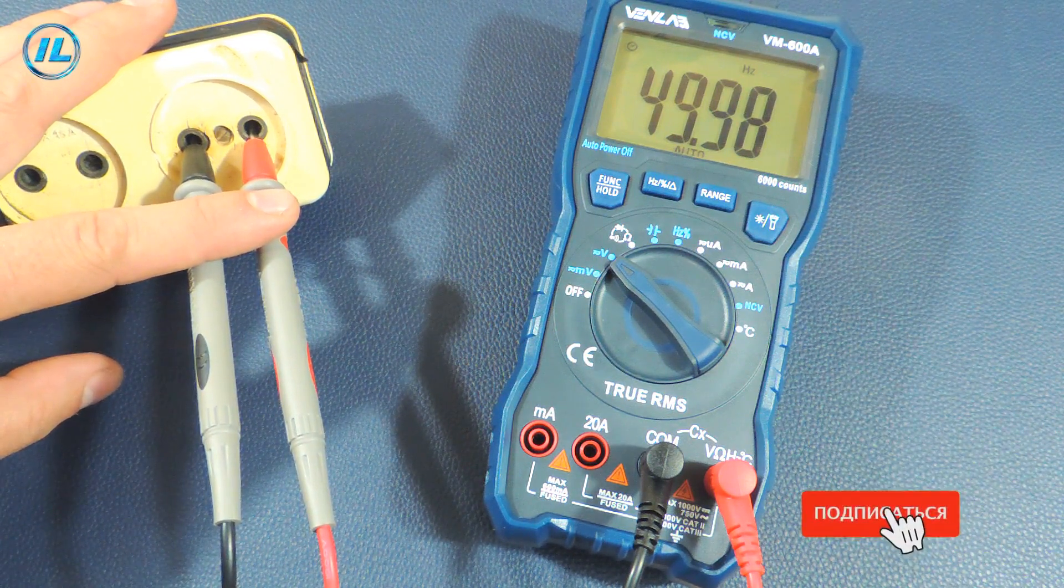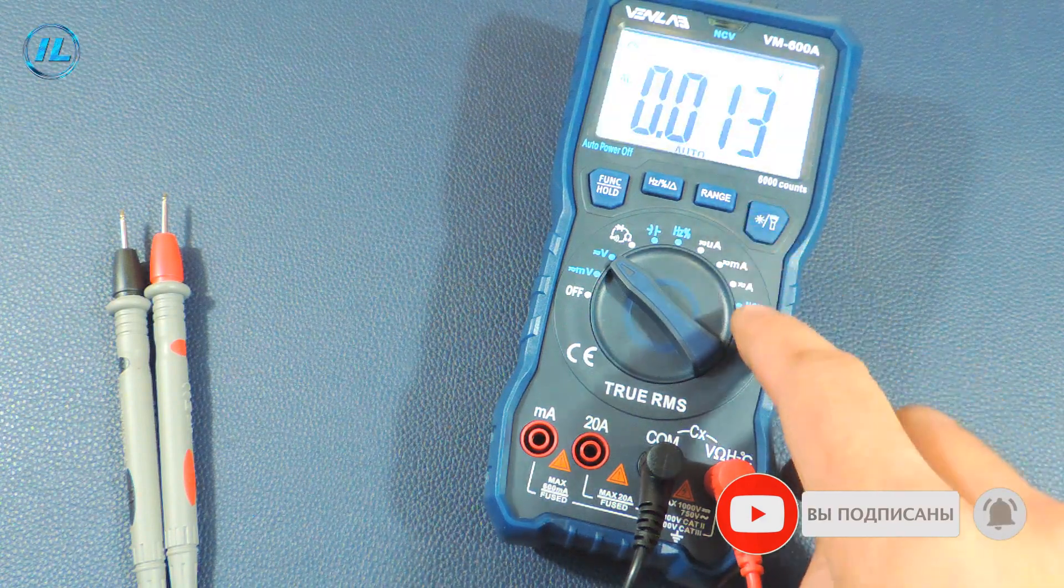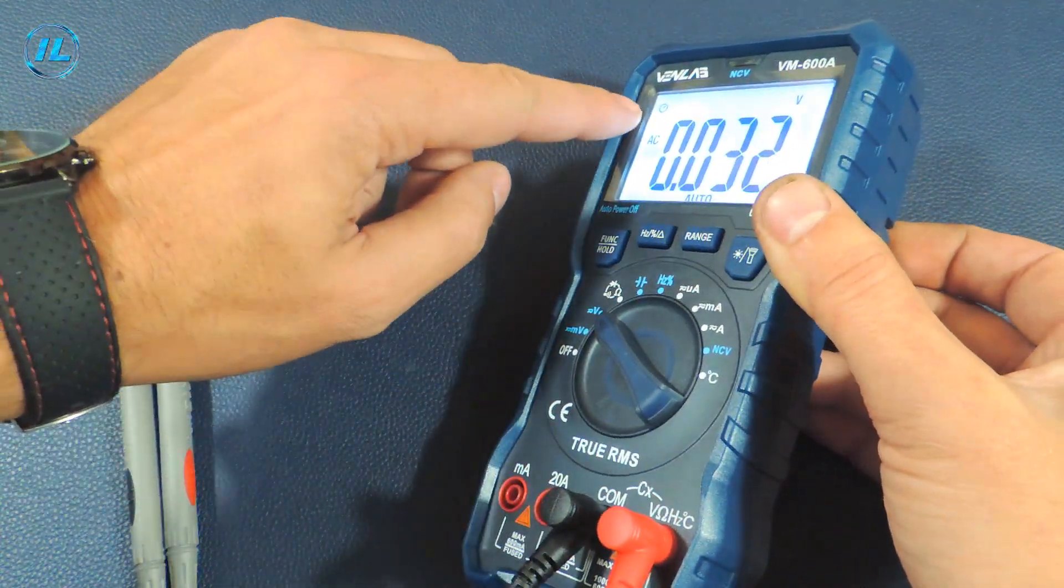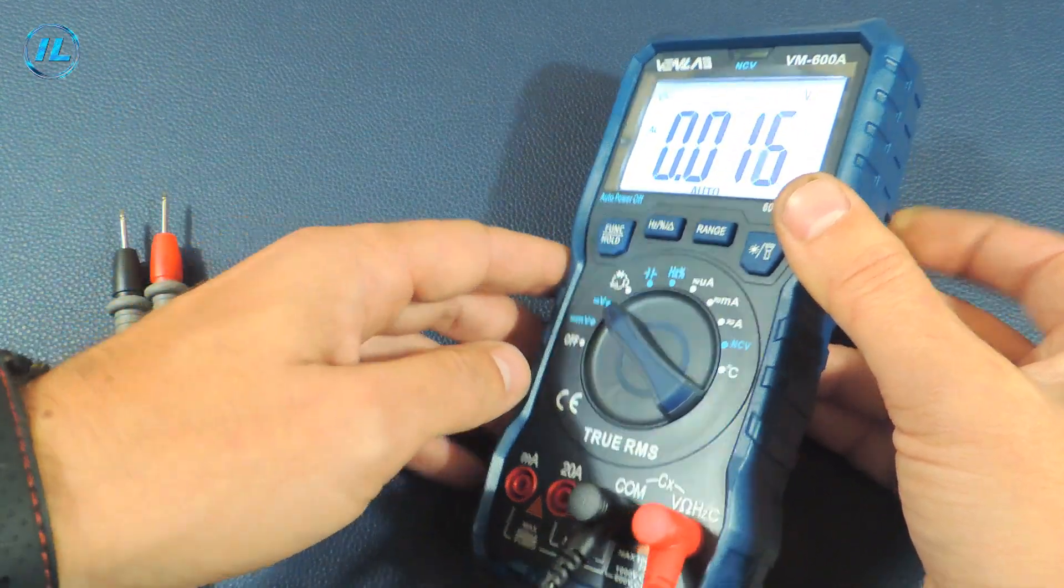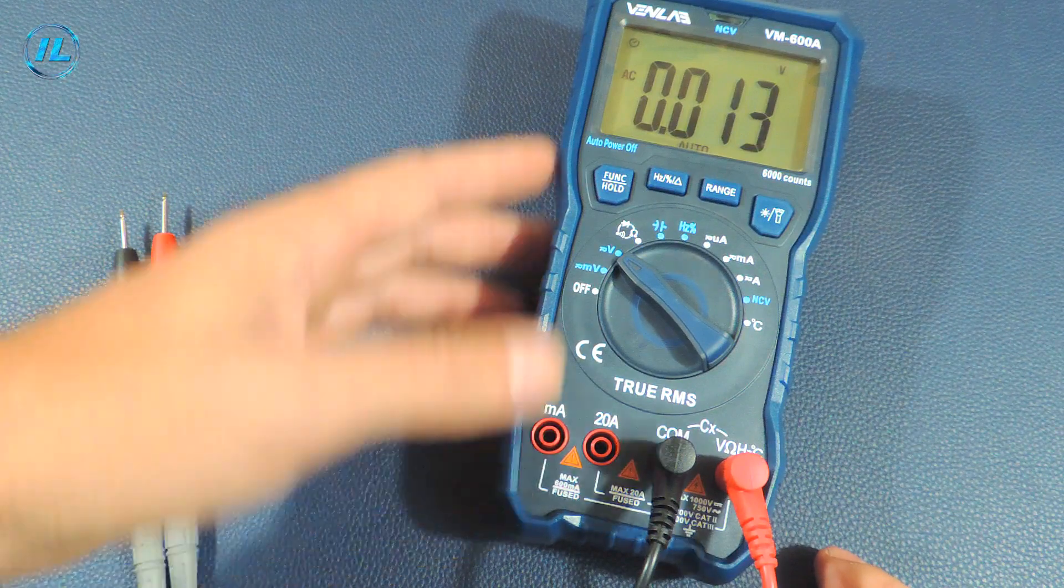The fourth button turns on the backlight of the screen. By the way, the backlight is very bright. Two LEDs. And with a long press the flashlight turns on.